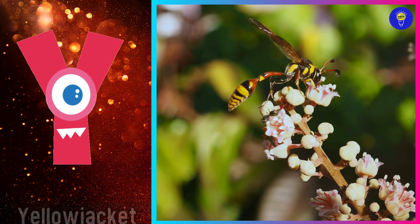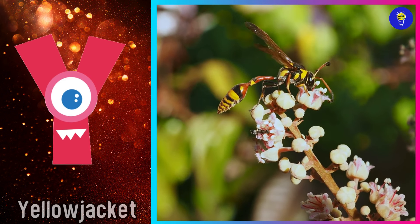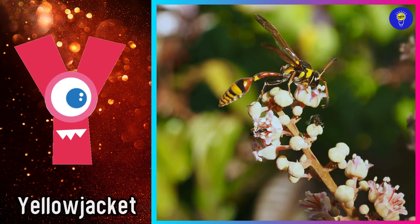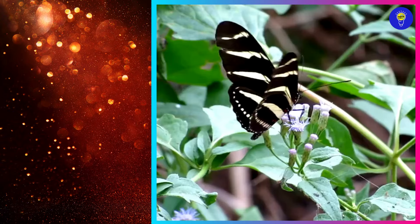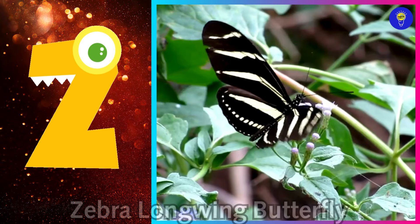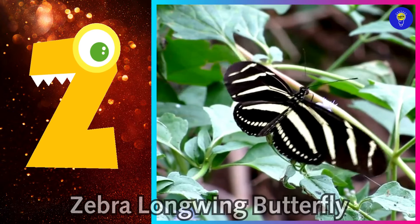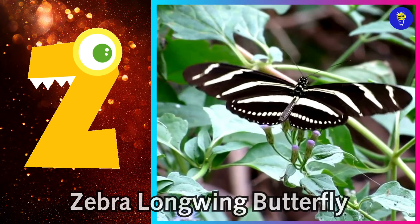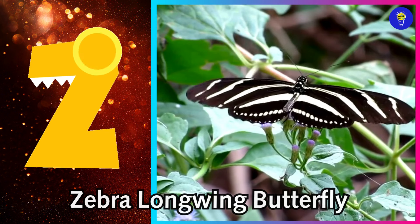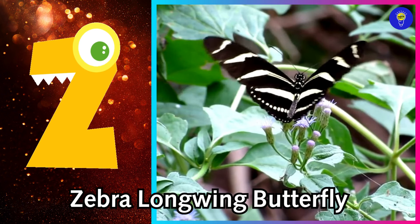Y is for yellow jacket. Y, yellow jacket. Z is for zebra longwing butterfly. Z, zebra longwing butterfly.